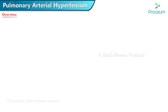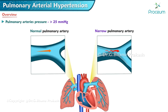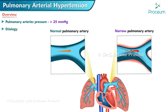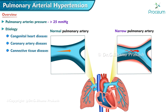Pulmonary arterial hypertension occurs when the pressure in the pulmonary arteries is higher than 25 millimeters of mercury. It is a cardiopulmonary disease occurring due to vascular smooth muscle hypertrophy. It may be caused by various etiologies like congenital heart diseases, coronary artery disease, connective tissue diseases, or secondary to chronic obstructive pulmonary disease.